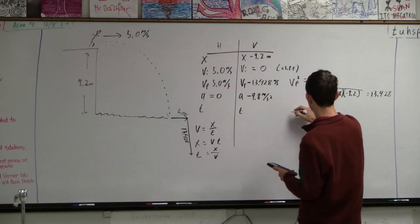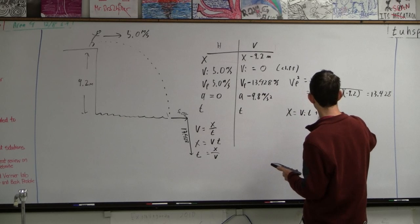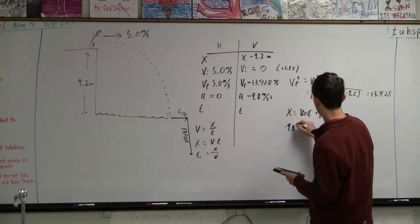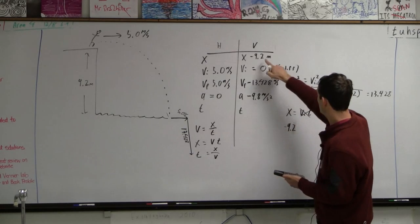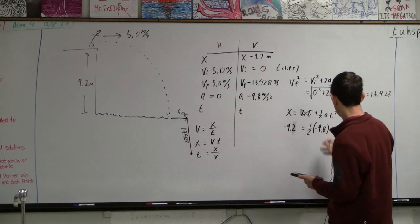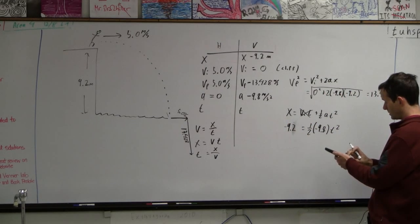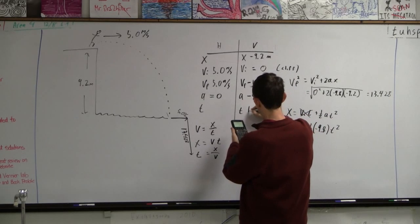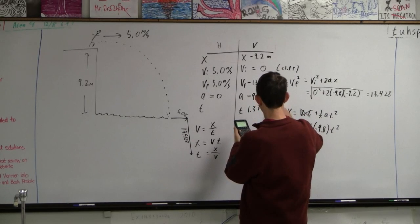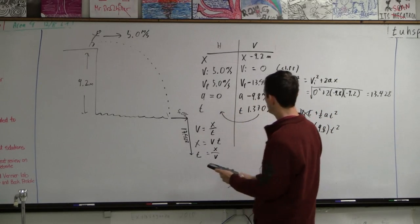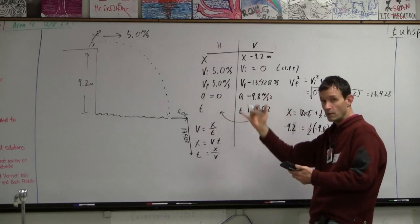To find time, I'm going to choose the formula X is VIT plus 1 half AT squared. And since the initial velocity is zero, this goes away. So negative 9.2, the displacement equals 1 half negative 9.8 T squared. And the negatives go away. And so we get 2 times 9.2 divided by 9.8 is T squared. And then I take the square root of that. And I get that the time is 1.3702. And I'm carrying all these numbers along. I've got 5 digits written down. And that way I won't be off. And then this thing carries over like that, kind of a whoop thing.